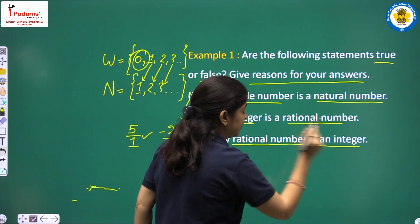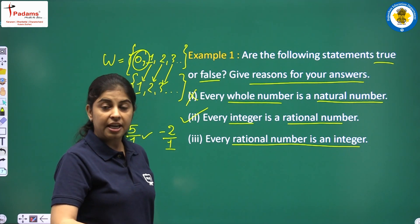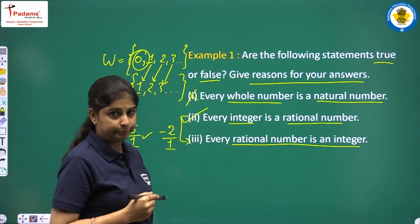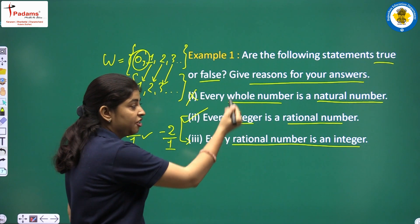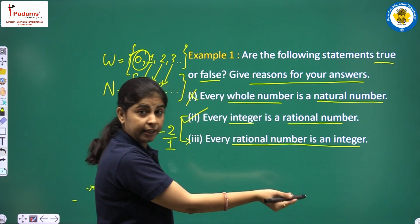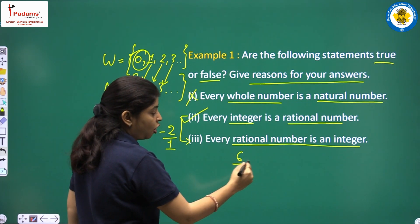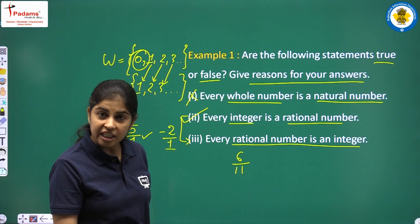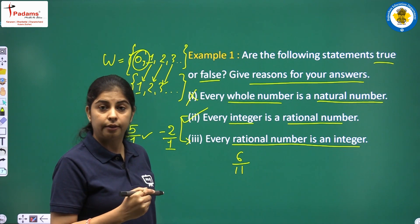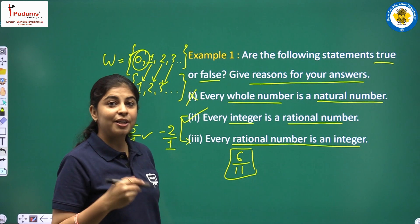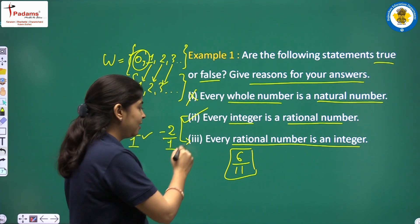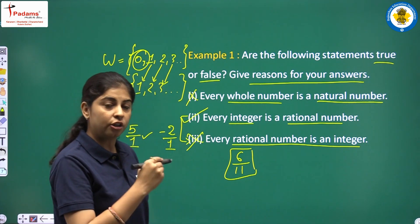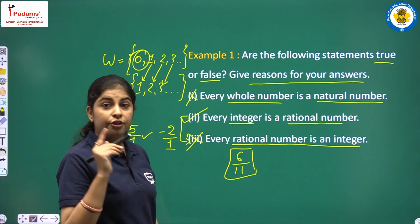Third statement: Every rational number is an integer. This is the vice versa of the second statement. Take a rational number like 6/11 — it is a rational number. But is it an integer? Integers are whole numbers, but 6/11 is in fraction form. So the third statement is false — not every rational number is an integer.